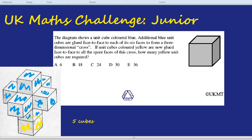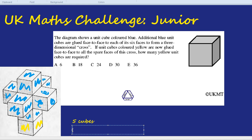Now that bottom blue cube is in exactly the same situation as that top blue cube. You'd need one on the left, one on the right, one at the front, one at the back, and one on top. So there's another five cubes. So it definitely can't be E, 86.